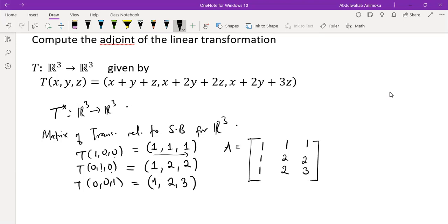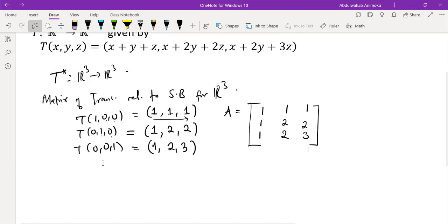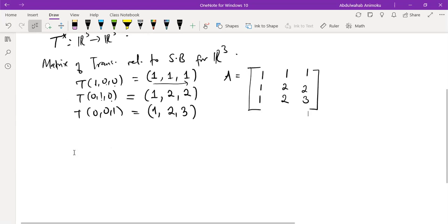This is the matrix of transformation relative to standard basis for R³ for this transformation. Now, what happens with the adjoint of this transformation? The theorem says the matrix of transformation for T star is just the transpose of A.